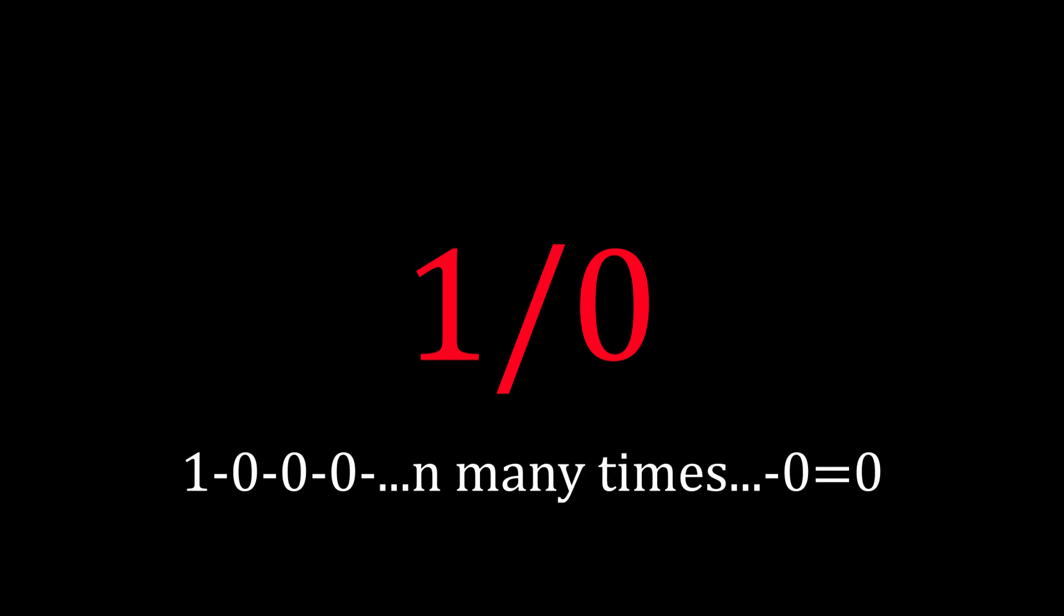Essentially, it means how many times you can subtract 0 from 1 until it becomes 0. But if you subtract 0 from 1 any arbitrary number of times, you will never reach 0.